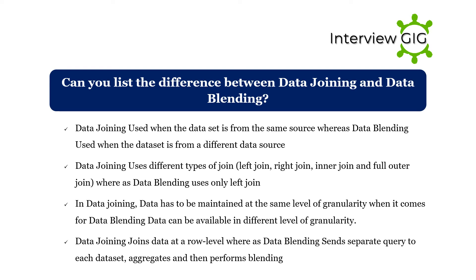Difference between data joining and data blending: Data joining is used when the dataset is from the same source, whereas data blending is used when datasets are from different sources. Data joining supports left, right, inner, and full outer joins, whereas data blending uses only a left join. In data joining, data must be at the same level of granularity; in data blending, data can be at different levels of granularity. Data joining joins data at the row level, whereas data blending sends separate queries to each dataset, aggregates them, and then performs blending.